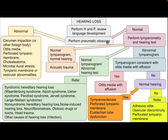If otoscopy is normal, perform tympanometry and hearing test. If tympanogram and hearing are normal, this is acoustic trauma. If tympanogram is normal but hearing test is abnormal, the patient needs referral to a multidisciplinary team. Differential diagnosis includes syndromic hereditary hearing loss such as Waardenburg syndrome, Alport syndrome, Usher syndrome, Pendred syndrome, Jervell and Lange-Nielsen syndrome.